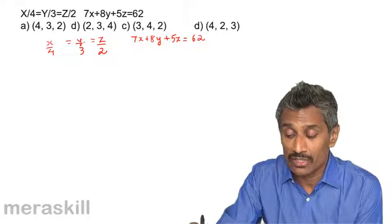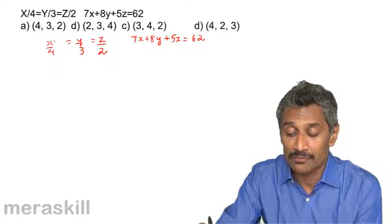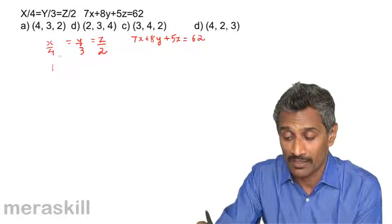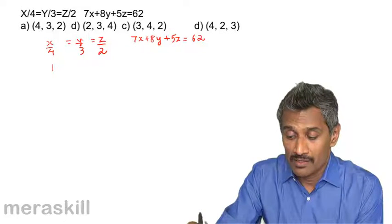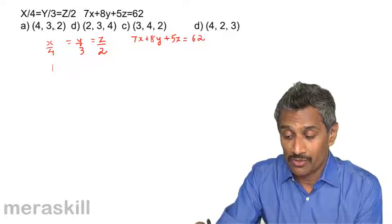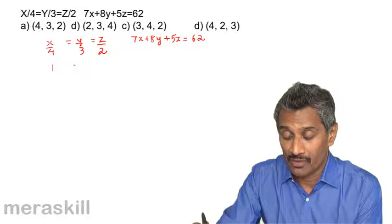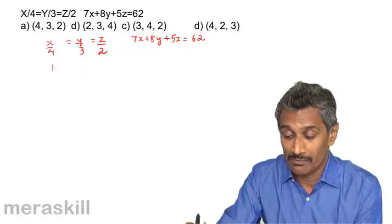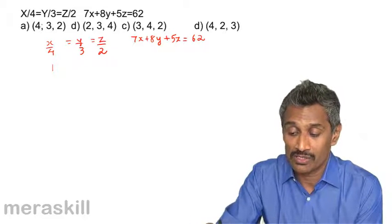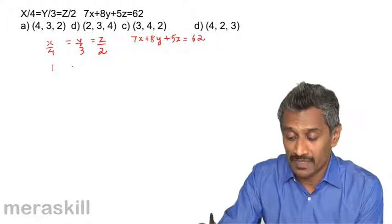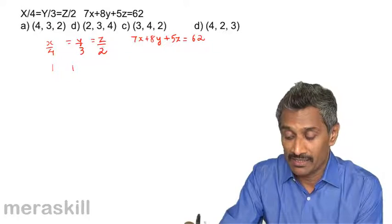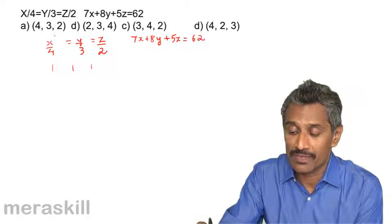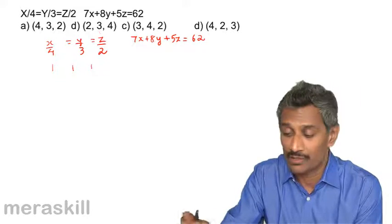Let's try to get whole numbers. If x is 4, then 4/4 = 1. Then y/3 gives us 3/3 = 1, and z/2 is also 1. So 4, 3, 2 satisfy this condition.